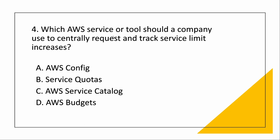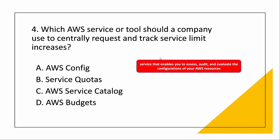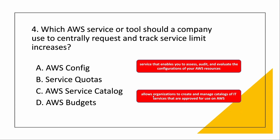Next question: which AWS service or tool should a company use to centrally request and track service limit increases? Every service has some limit, and before you go to high bill payments you want to see how to limit services. AWS Config is a service that enables you to assess, audit, and evaluate the configurations of your AWS resources. AWS Service Catalog allows organizations to create and manage catalogs of IT services approved for use on AWS — like a catalog showing what each service does and how to manage it.